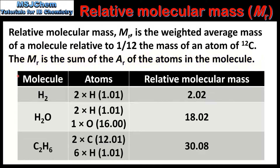So in this table we have some examples. Starting with hydrogen, which is a diatomic molecule consisting of two hydrogen atoms bonded together. Each hydrogen atom has a Relative Atomic Mass of 1.01, so we multiply this value by 2 to get a Relative Molecular Mass of 2.02. The next example is H2O, which is composed of two hydrogen atoms and one oxygen atom. If we add up the Relative Atomic Masses of the atoms we get a Relative Molecular Mass of 18.02.